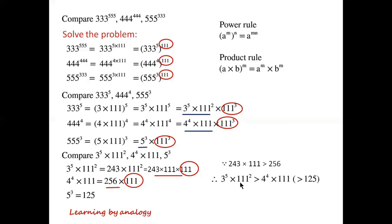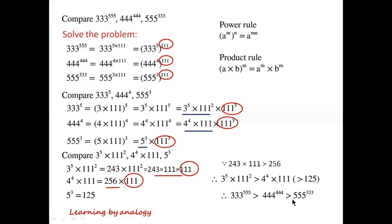243 times 111 is greater than 256, and 243 times 111 times 111 times 111 is greater than 125. So 333 to the power of 555 is greater than 444 to the power of 444, which is greater than 555 to the power of 333.